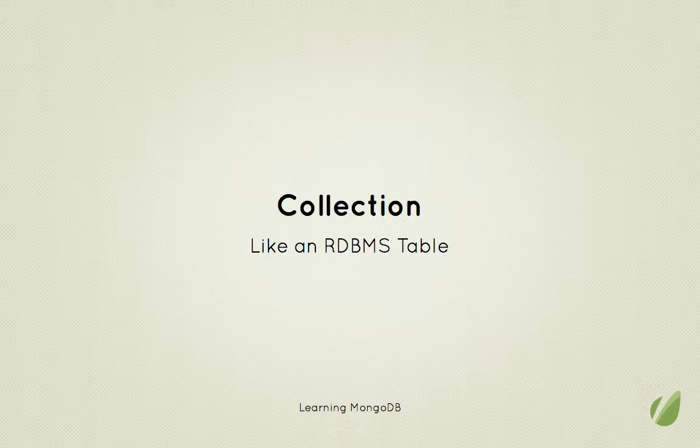Let's move on to something a little bit more interesting: collections. A collection is similar to a table in a relational database. However, unlike a table, a collection has no schema — that is, you don't define a set of columns, their data types, and things like that. This is an important part of NoSQL databases: they don't usually follow a schema at all.